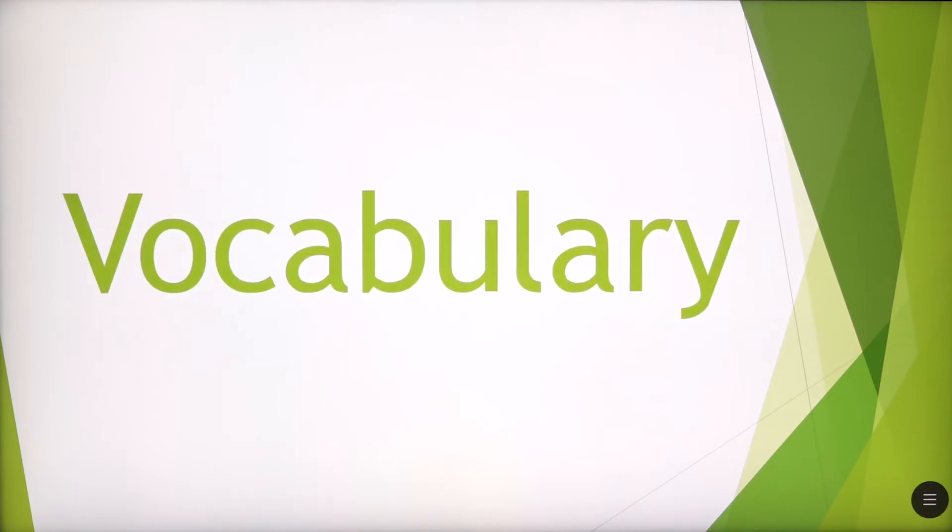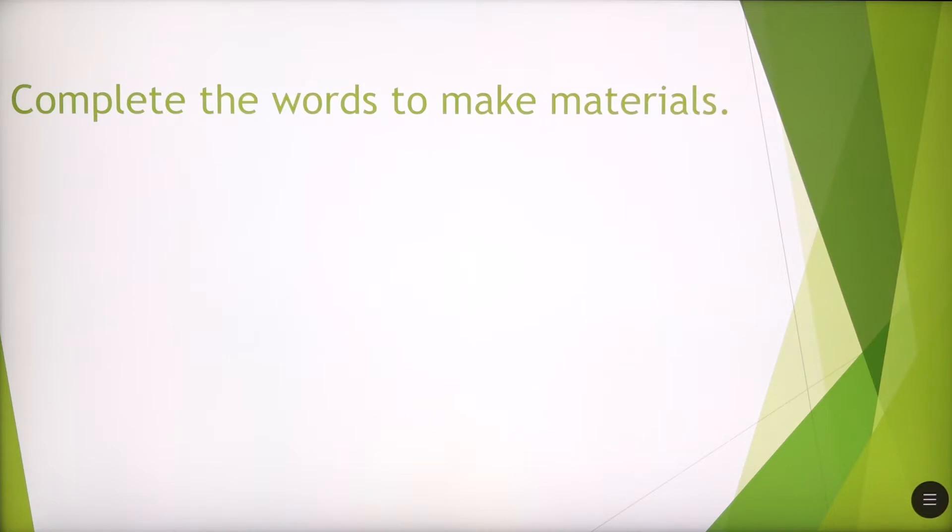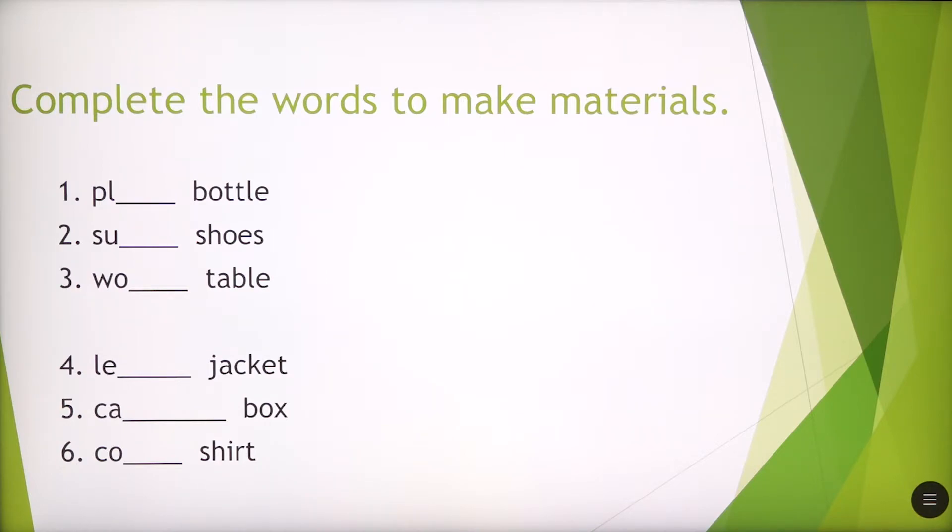Let's proceed with vocabulary. How many words did we learn during this chapter? Or are there phrases that we don't really know how to use them? Let's check. Complete the words to make materials. So there are some words presented here which are incomplete. You have to find what are the letters that are missing. Which are the missing letters? Number one, it starts with PL, PL bottle. What's PL? What kind of letters would you add here? It's plastic, plastic bottle.